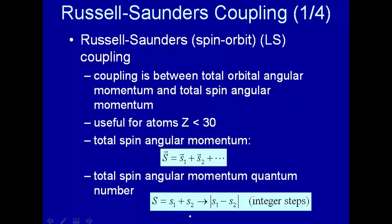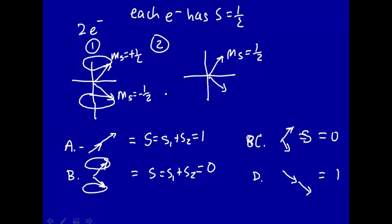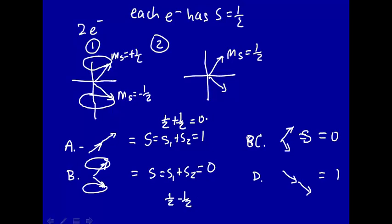The rule is: S can be the sum of the spins, one half plus one half equals one, or the difference, absolute value of one half minus one half equals zero, in integer steps. So for two electrons it can be one or zero. In other words, you add the spins and subtract the spins and go from the sum to the difference in integer steps. For these two electrons, there are just two values: S1 plus S2 equals one, or S1 minus S2 equals zero.